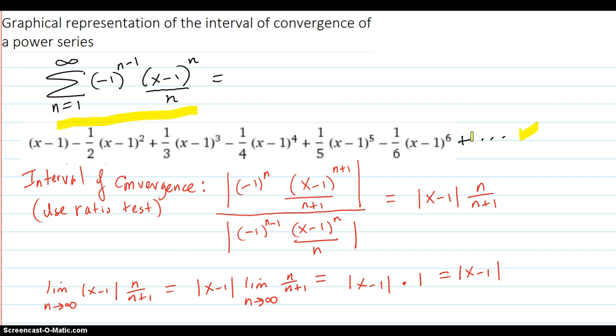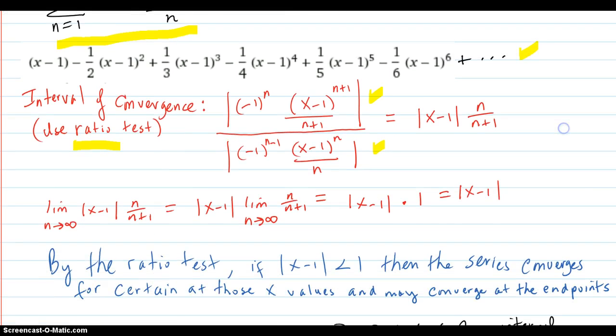Testing for the interval of convergence, use the ratio test. You do your normal n plus 1 type of idea. Then that reduces down to here. You take the limit as n goes to infinity. Of course, x is not moving for a particular x value, that factors out. This limit goes to 1.